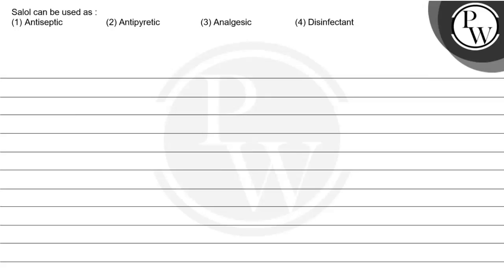Hello kids, let's see this question. The question says: Salol can be used as — and the options are: first option is antiseptic, second option is antipyretic, third option is analgesic, and fourth option is disinfectant.